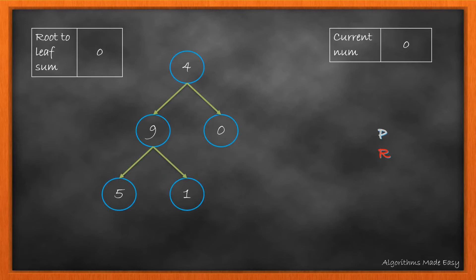Let's take the same example. We will have two markers: one is root and other is predecessor. We will have current number which will hold the sum till the current node, and a root to leaf sum which will hold the total sum. Initially we will have 4 as root. We will iterate in loop till the root is not null.